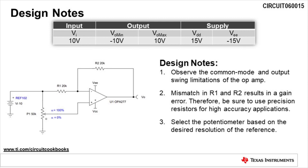Next, mismatch in R1 and R2 results in a gain error. Therefore, be sure to use precision resistors for high accuracy applications. Finally, select the potentiometer based on the desired resolution of the reference.